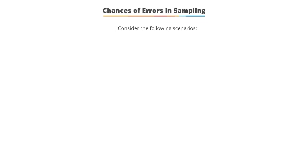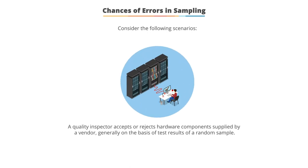Now, there are always chances of errors in sampling. Consider the following scenario: a quality inspector accepts or rejects a hardware component supplied by a vendor, generally on the basis of test results of a random sample. Well, the manufacturing plant could have had a single bad batch, but if that was the sample that was tested, the assumption would be that everything is bad. So even if only one box out of 100,000 was bad, if that's the one that was subsampled, then the assumption would be the other 999,999 boxes are also bad.